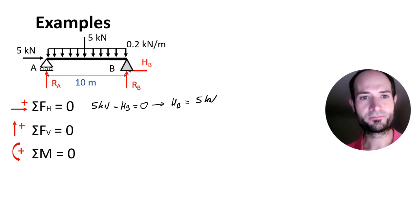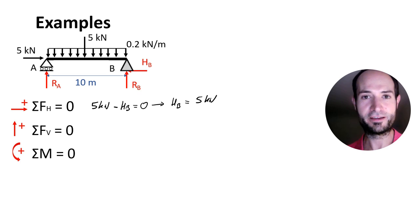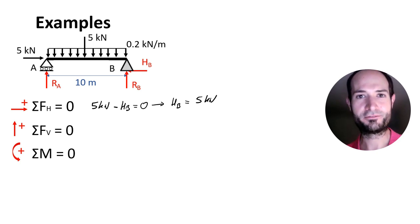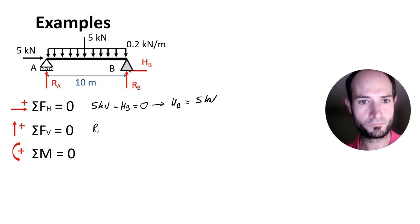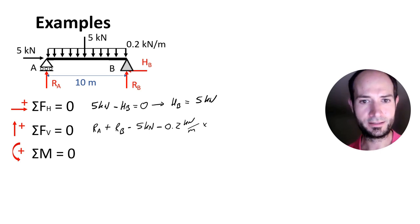If you have a look at the structure, you will see it's symmetrical. So just by common sense, if the point load is right in the middle, you know that each support will carry half of the load — half of 5 kN and half of the self-weight. But I will calculate both equations for practice. Vertical loads: we have Ra going up (positive) and Rb going up (positive), then 5 kN going down (negative), and the self-weight going down — 0.2 kN per meter times 10 meters — equals zero.